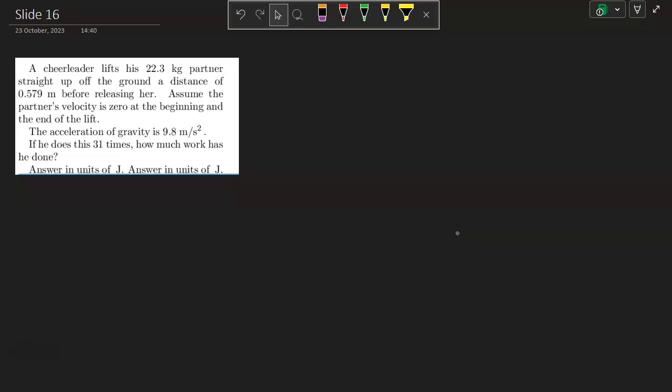A cheerleader lifts his 22.3 kilogram partner straight up off the ground a distance of 0.579 meters before releasing her. Assume the partner's velocity is zero at the beginning and end of the lift. The acceleration of gravity is 9.8 meters per second squared. If he does this 31 times, how much work has he done?